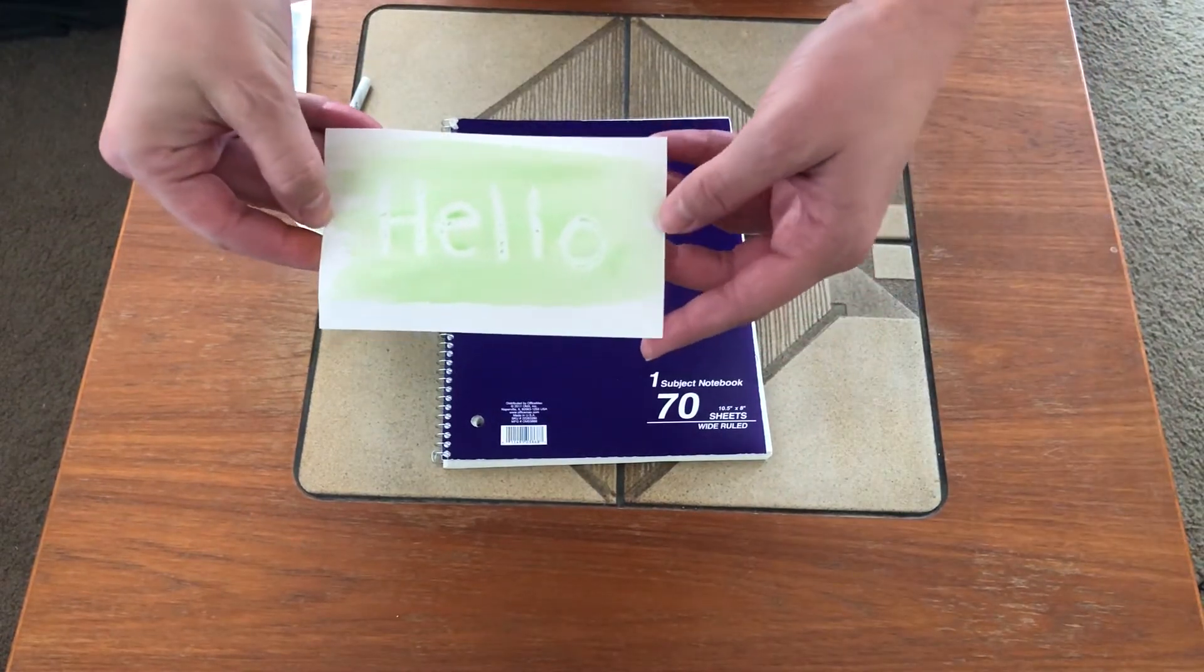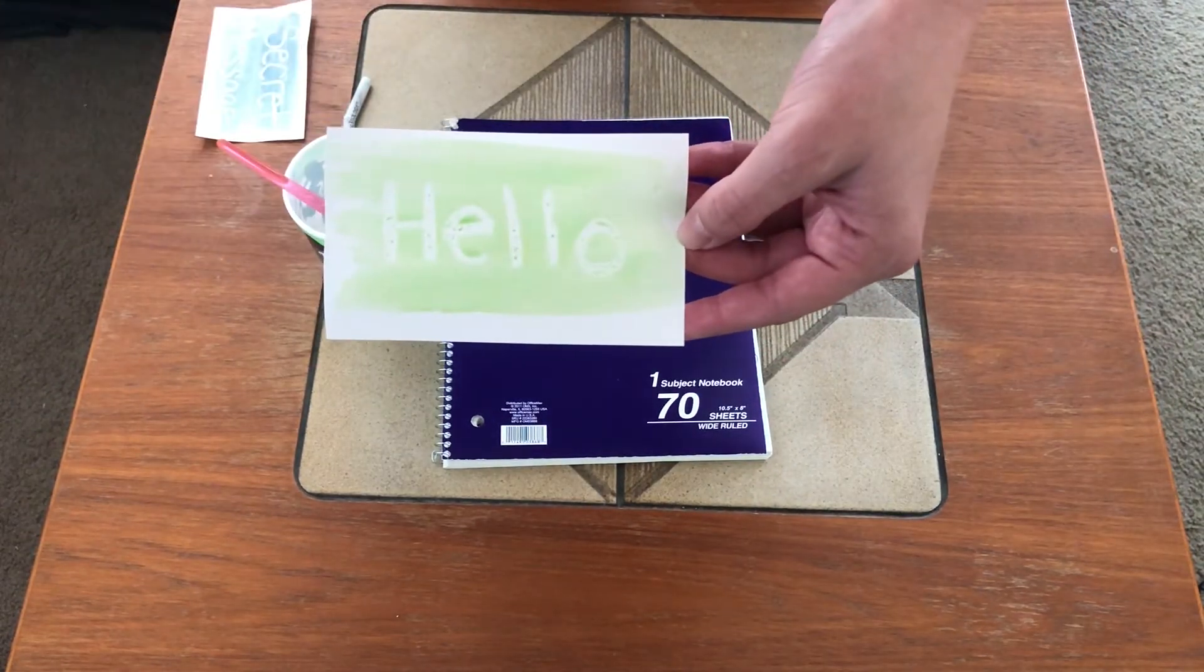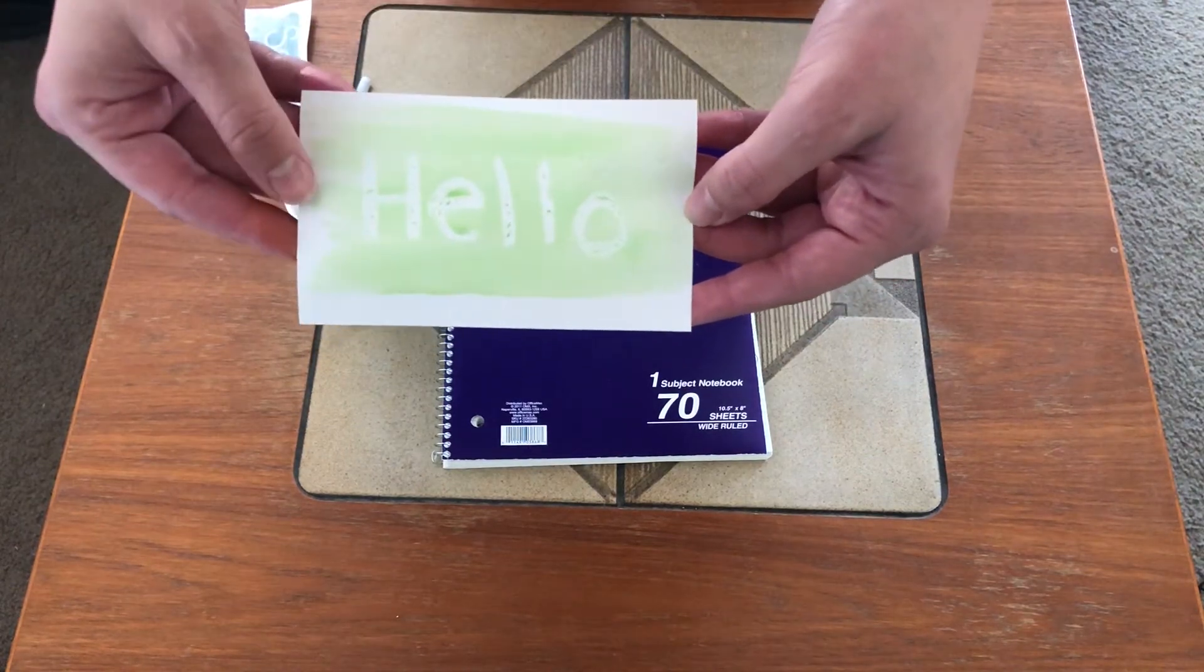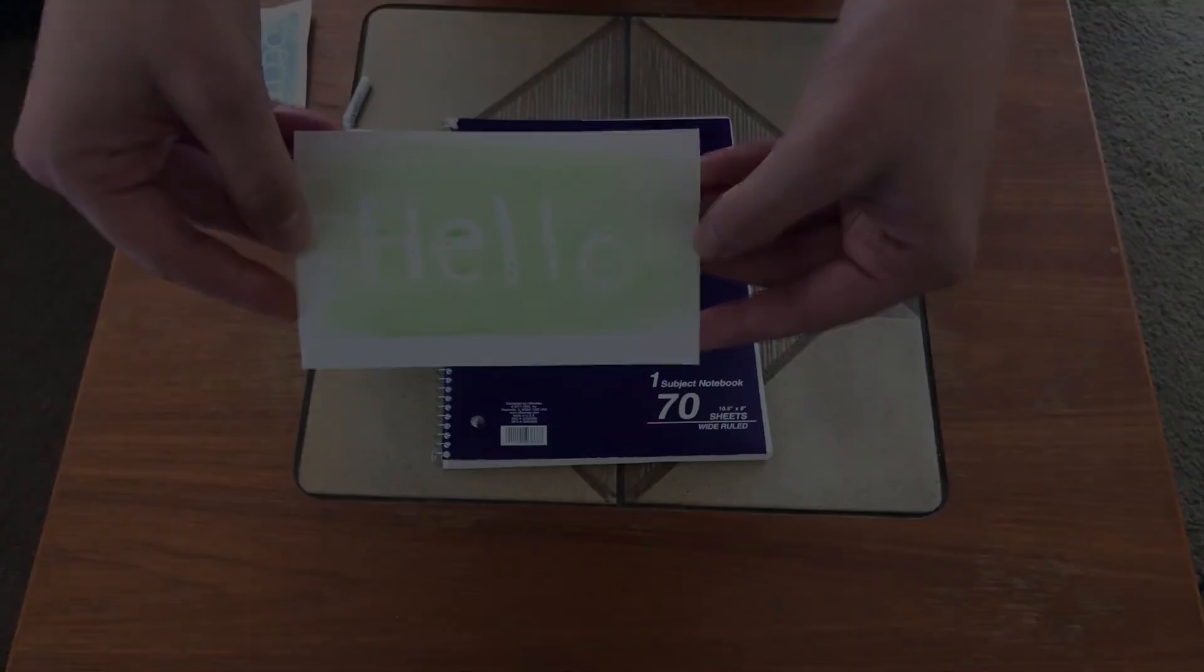Now if your words didn't show up as well, just remember the more pressure you use when you're writing on the paper, the better it'll show up when you paint over it. So there you go. Enjoy your secret messages.